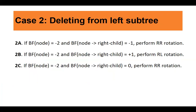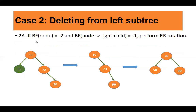Now let us look at Case 2 — deletion from the left subtree. Similarly, there are three subcases. Delete 35, which is on the left subtree of the node. After deleting 35, balance factor of 50 is -2 and balance factor of node's right child is also -1. Carry out right-to-right rotation (left-left rotation): 70 becomes the new root, 50 is the left child, and 90 is the right child.